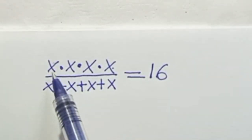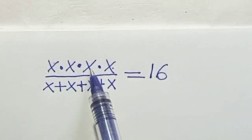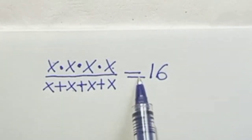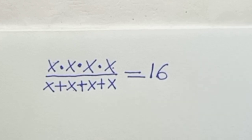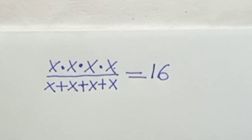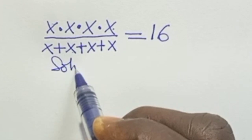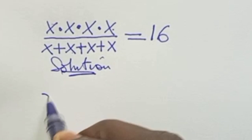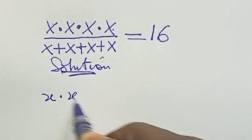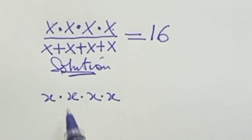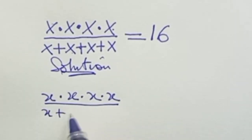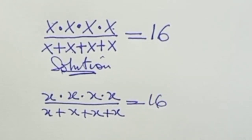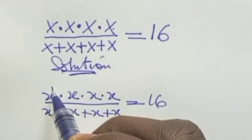Hello everyone. Today we have x times s times s times s all over x plus s plus s plus s equals 16, and s is the unknown. So if we solve together, I'll go to see the solution. Here we can write it as s times x times s times s times s in four places all over x plus s plus s plus s equal to 16.